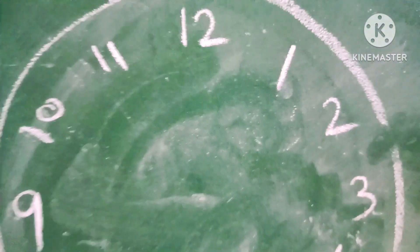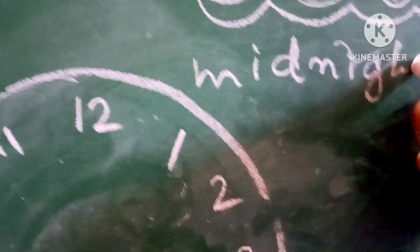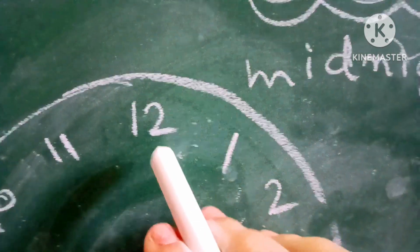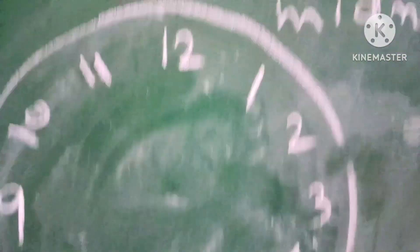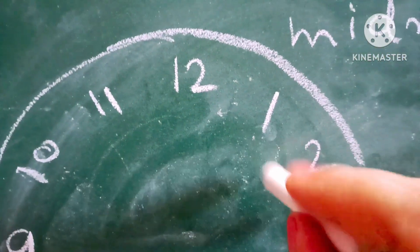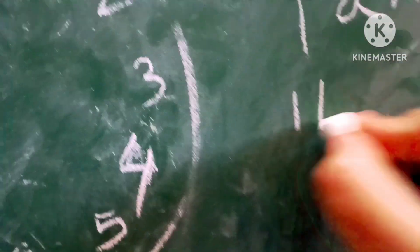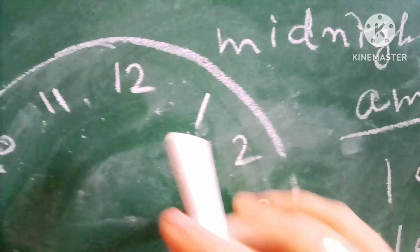Now we will look at A.M. and P.M. We start at midnight, which is 12 o'clock at night. From midnight through the morning up until 11 o'clock in the morning, and then noon at 12 — all of this time is called A.M.